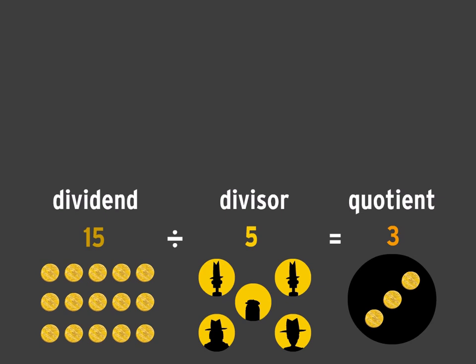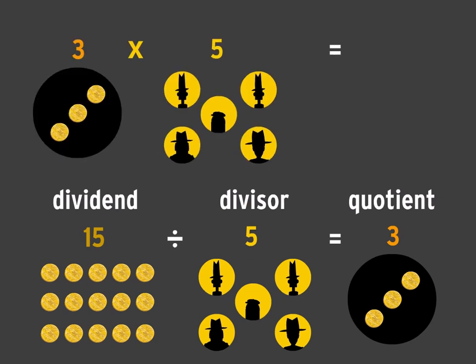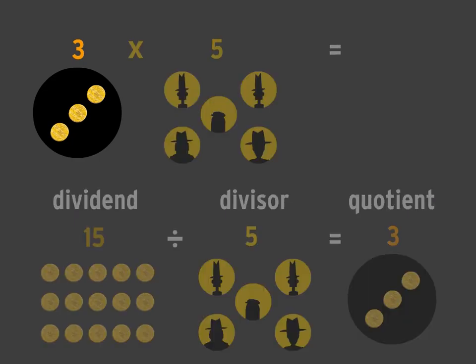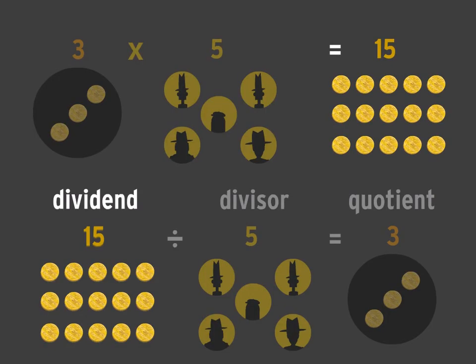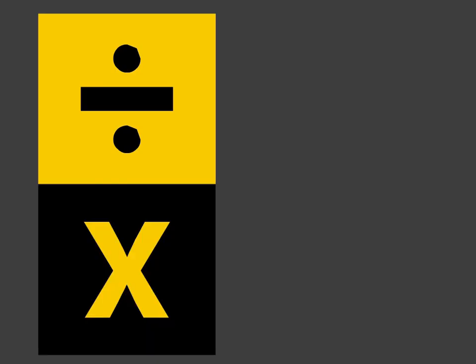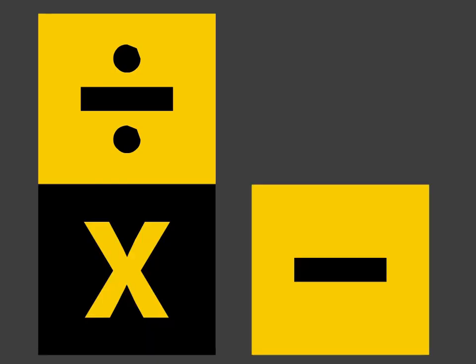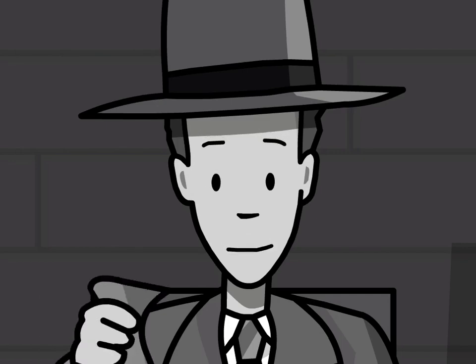You can check your answer by multiplying the quotient by the divisor — if your answer is the dividend, you've done it right. Let's see: three times five equals 15. Yep, we've got it! That's because division is sort of like the opposite of multiplication, in the same way that subtraction is the opposite of addition. And now for the last part of the haul.